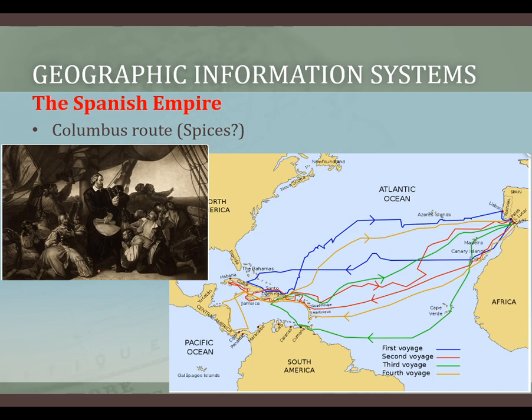Christopher Columbus believed the earth was a sphere and decided to sail west to reach India, which led to his discovery of the Americas. The slide shows his different voyages — from the first to the fourth — and his routes. He then began creating and building maps of these newly discovered lands.